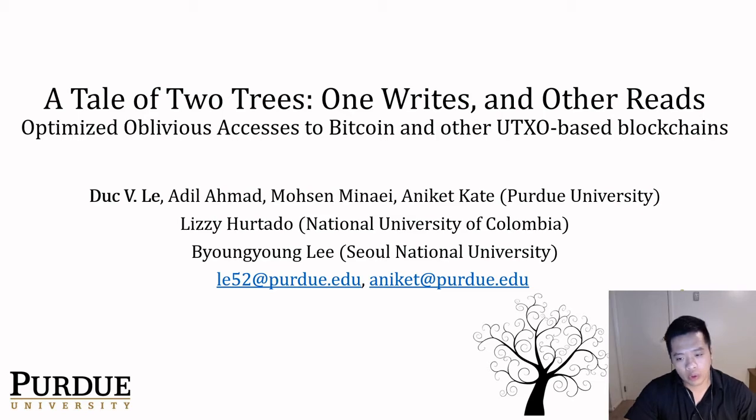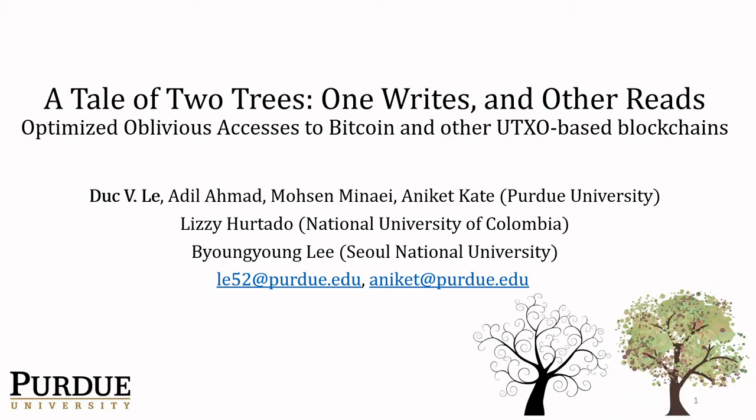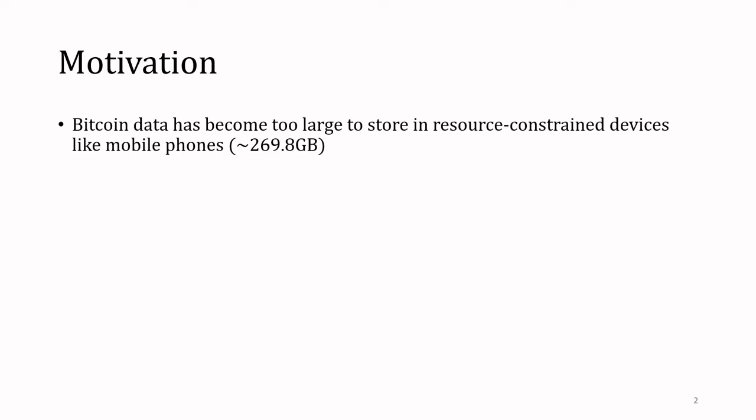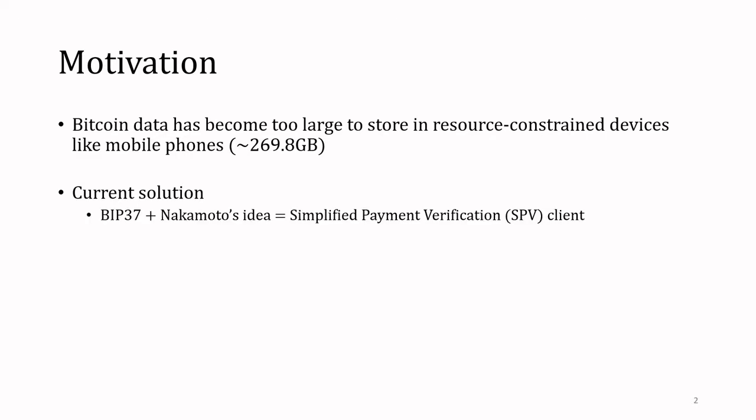To begin with, some motivation of this work: as we all know, the size of the Bitcoin data has become too large to store in resource-constrained devices like mobile phones or personal laptops. As of March 2020, the size of this database is around 269 GB. The current solution to address the storage issue is the SPV client, whose design relies on Nakamoto's idea in his white paper and is later standardized in Bitcoin Improvement Proposal 37.